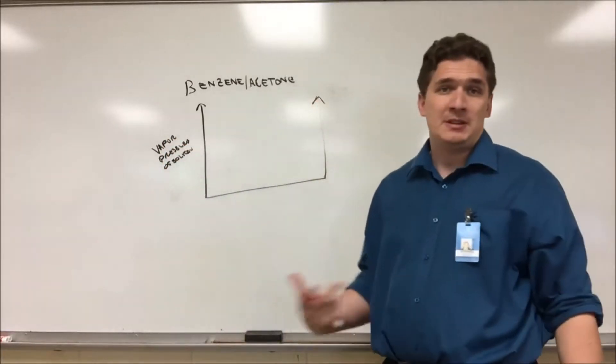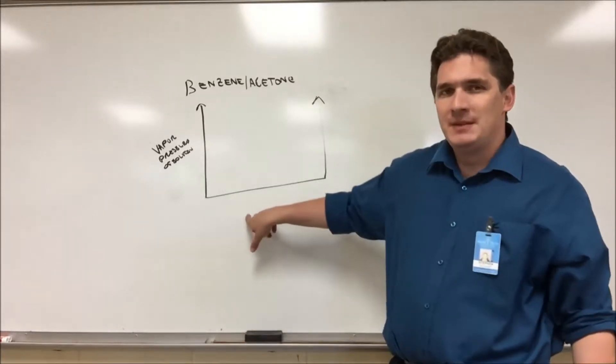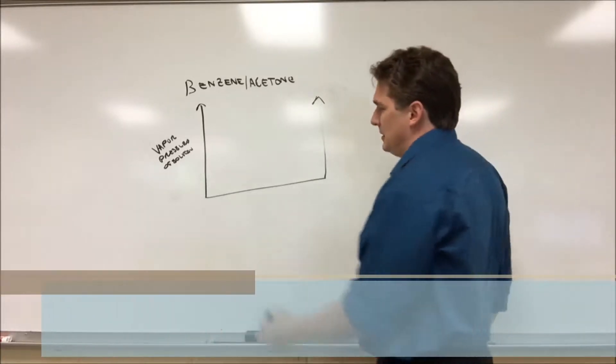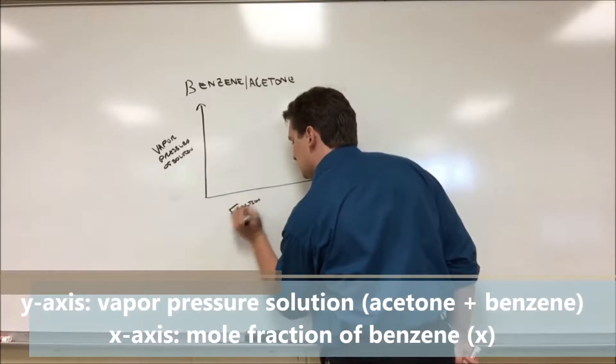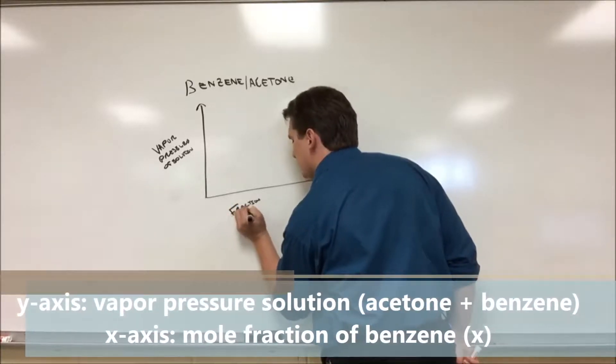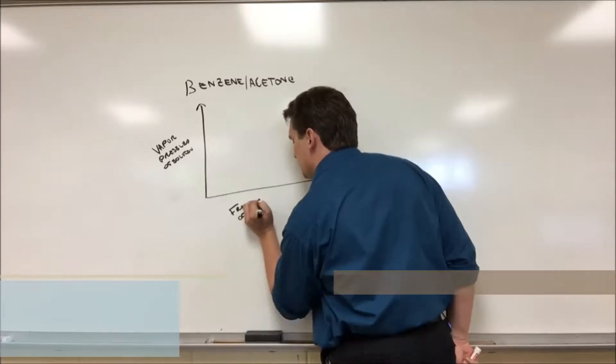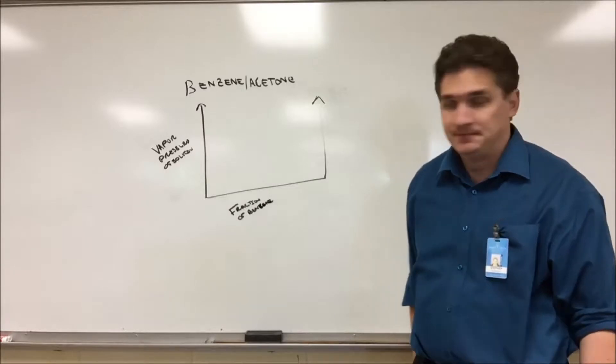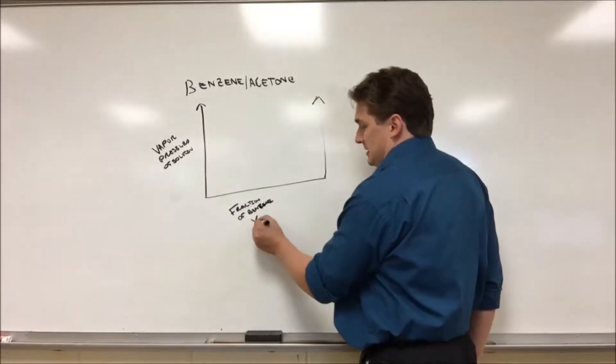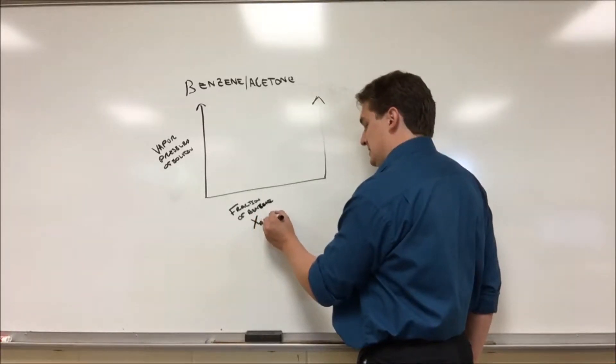So basically, what do we expect the vapor pressure to be? Now on this bottom axis, we're gonna have the fraction of benzene. So basically how much benzene do we have in solution? This needs to be a mole fraction, so this is gonna be X benzene.